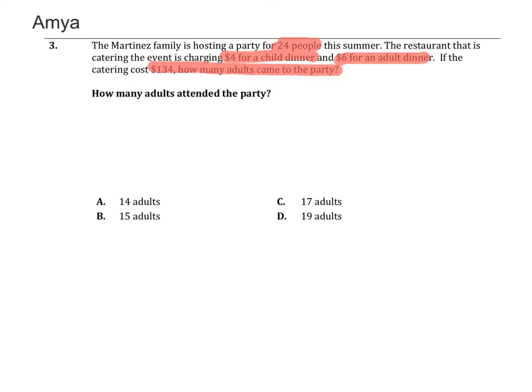So I know that I need to set up an equation. I know that the children are X and the adults are Y. A total of them will make up 24 people. I know that the child ticket costs $4 and the adults cost $6, and that made a total of $134. And I want to find Y values because that's for the adult tickets.